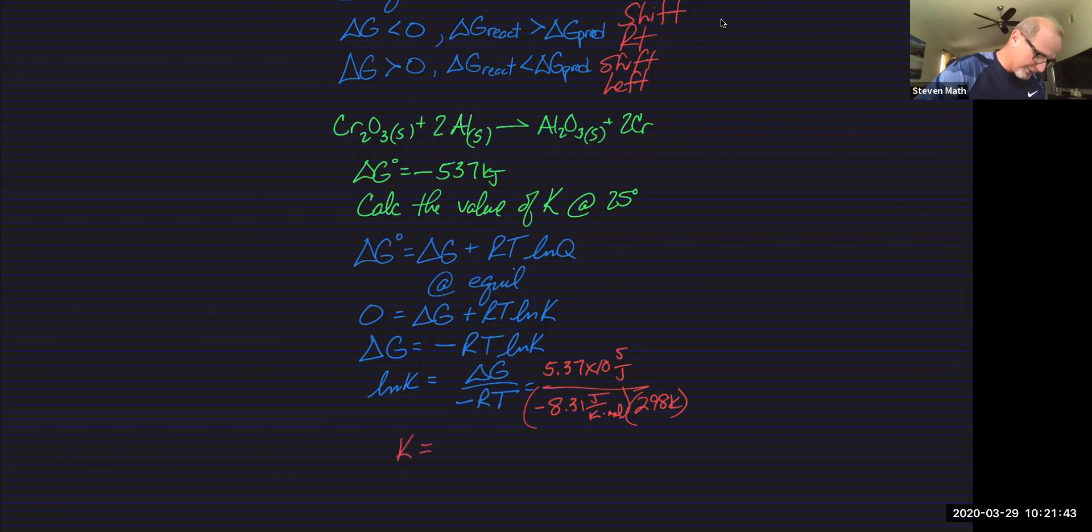And solve that and K is going to be equal to 1.3 times 10 to the 94th. What does that mean? This reaction is very spontaneous and the equilibrium lies far to the right, that this is going to occur because G is so big in the negative side. It's super spontaneous and that's going to shift this equilibrium over to the right side. This reaction is going to occur and favor the product.